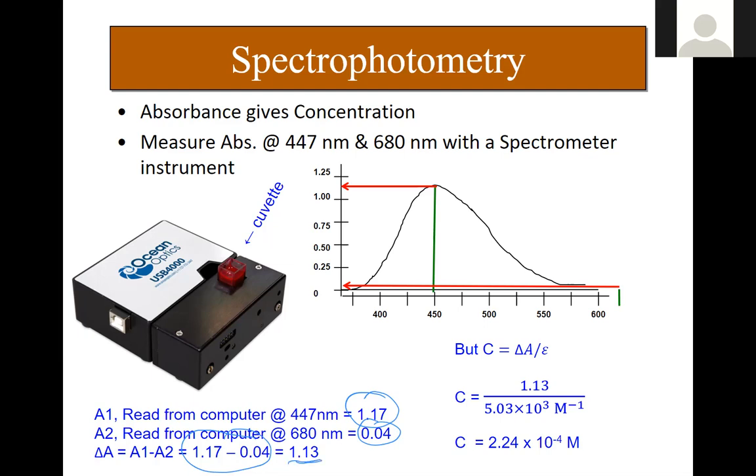Now plugging that into this equation over here, we can solve for the concentration of the product because that's the thing that's red. We're measuring the red substance there and I can solve for the concentration: 2.24 times 10⁻⁴.